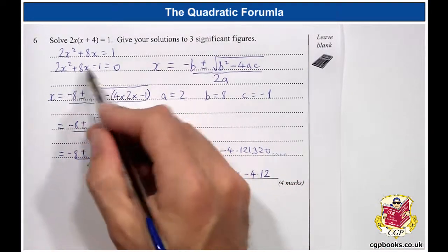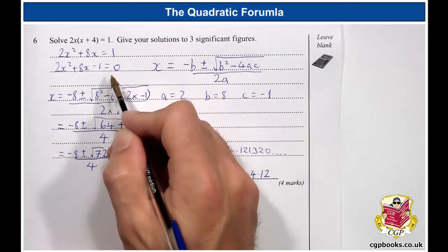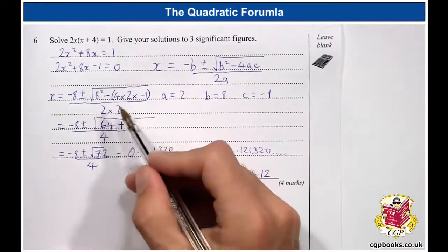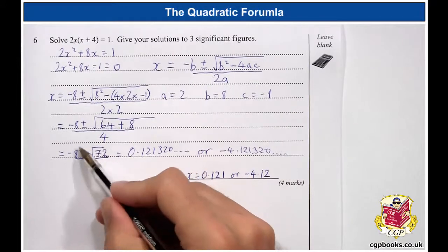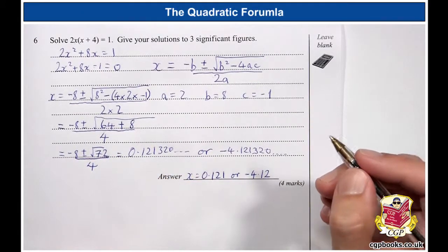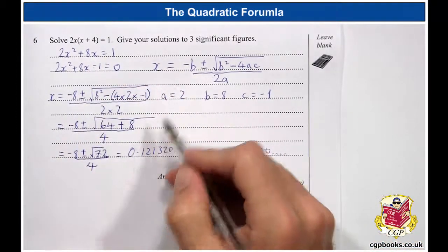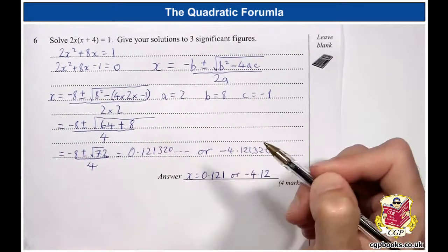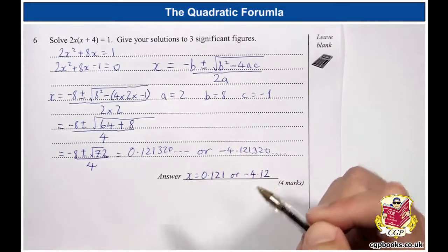You'll get one mark if you rearrange the equation into that form. Another mark if you put the values correctly into the formula. And another mark if you get this far. So, if you get the correct third form. So, a bit of everything with this question, really. Bit of algebra, bit of formula, bit of calculator, bit of rounding. Bit of everything.